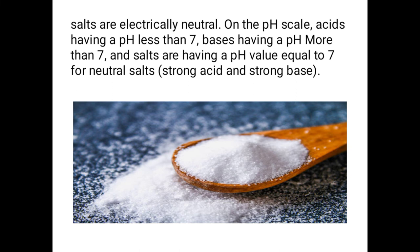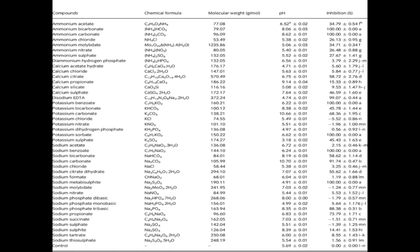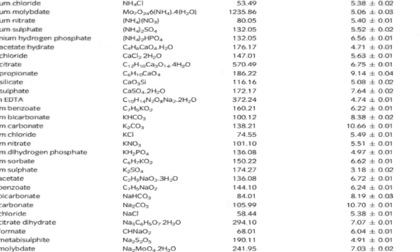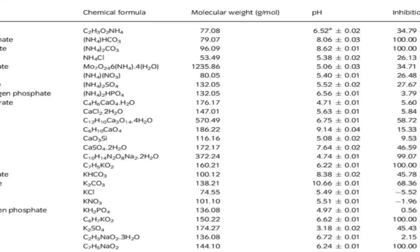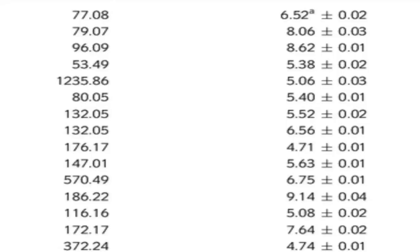In the case of salt, the pH value of salt is 7. Now here is a list of some compounds with their pH values. If the pH value is greater than 7, it is called a strong base or weak acid. If the pH value is less than 7, it is called a strong acid or weak base.